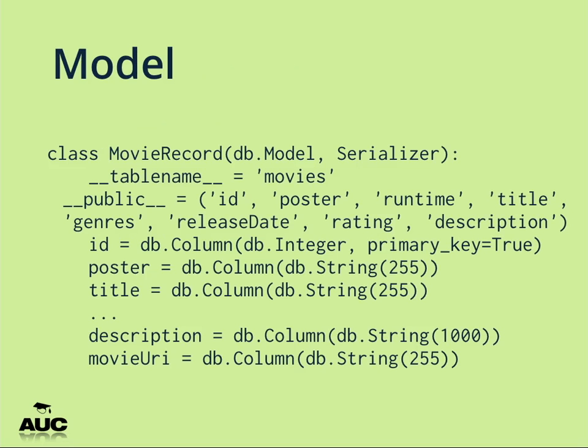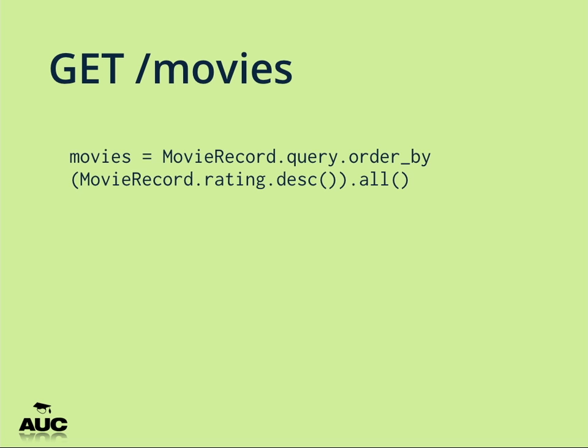Now for the model — this is pretty basic stuff, just setting up some basic fields: poster image URL, title, with arbitrary limitations on size and string type. GET /movies does a SQLAlchemy filter on our movie record — that model we created — and returns all movies descended by rating. SQLAlchemy is doing all that work for you in the background.